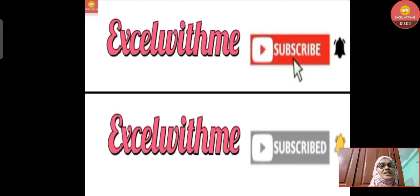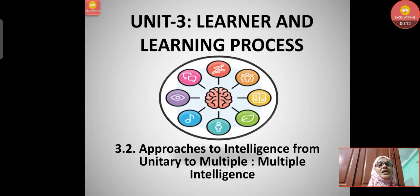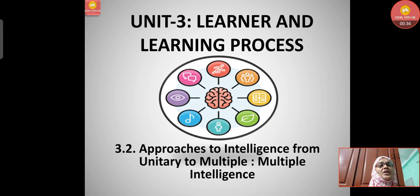Hello learners, this is Habibah with Excel With Me, with a new topic of UGC NET Education Paper 2, Unit 3: Learner and Learning Process. Please subscribe to this channel if you like the videos. Today's topic is approaches to intelligence — from unitary to multiple. We have discussed many topics under this unit, and now we are going to take up the subtopic of multiple intelligences.